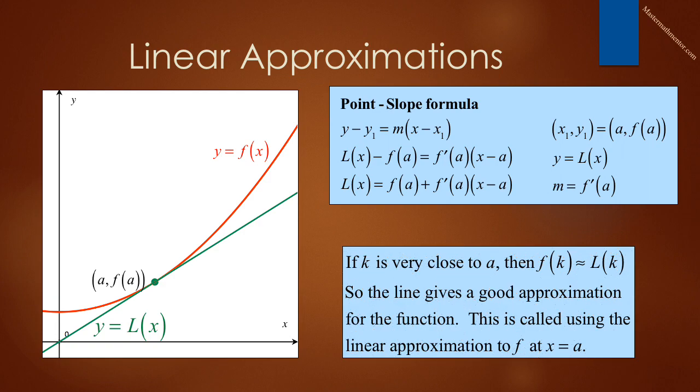What does this complicated looking expression mean? If we have a value of k that is very close to a, then f of k is approximately equal to L of k. So the line gives a good approximation for the function. And this is called using linear approximation to f at x is equal to a.